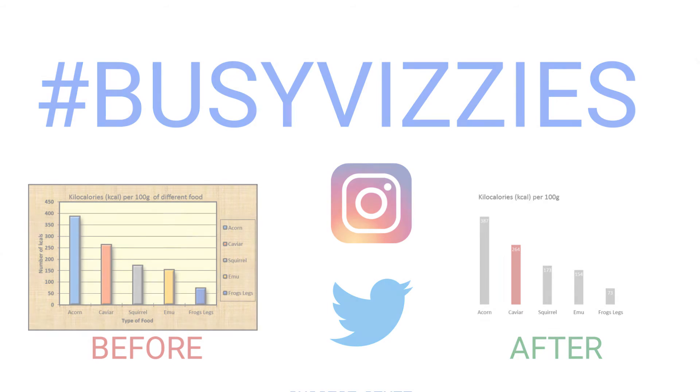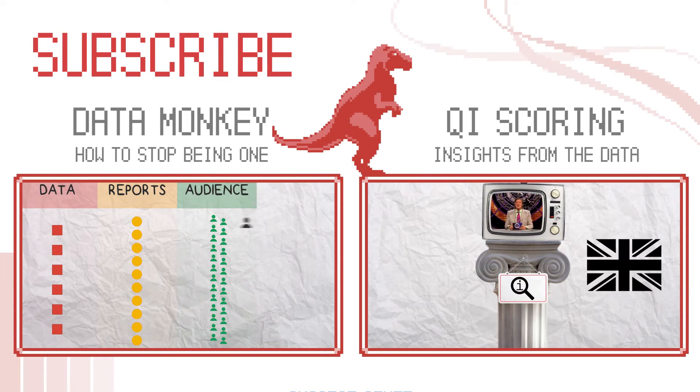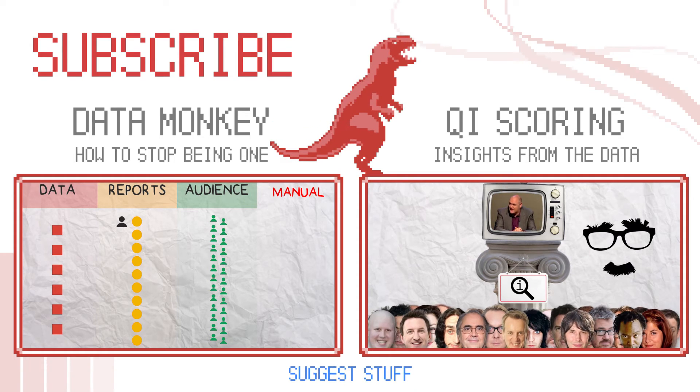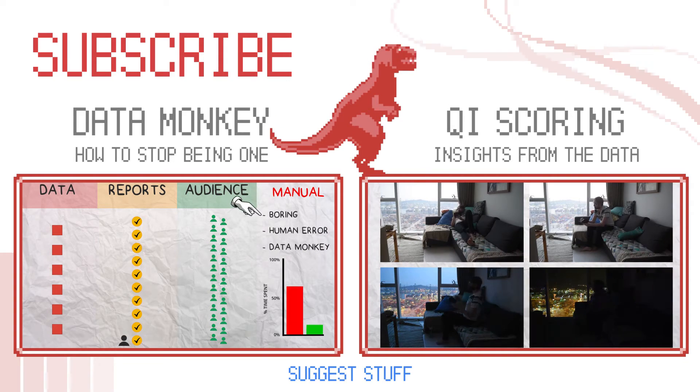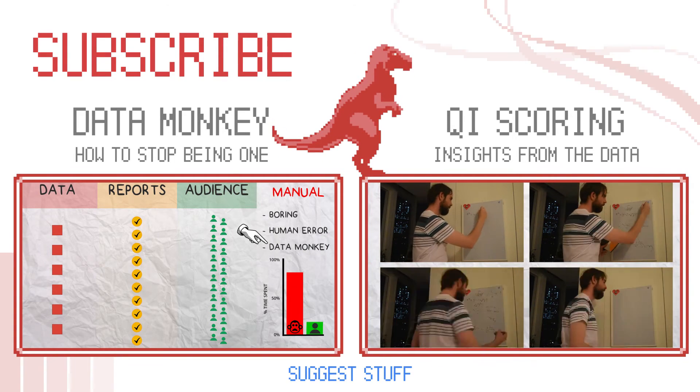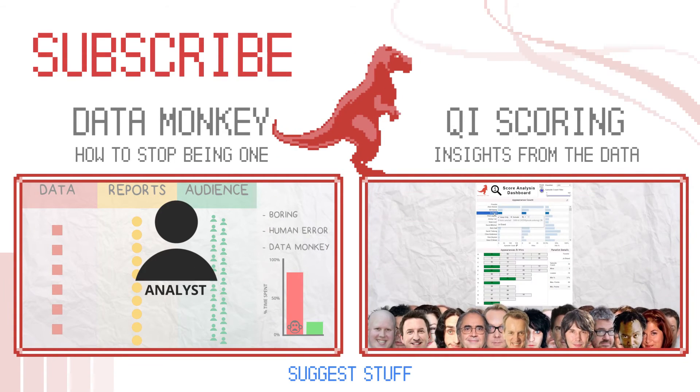And if you want to see more, check out these videos where I highlight how report automation can stop you being a data monkey and become an analyst instead, or how I try and make sense of the QI TV show's scoring system.